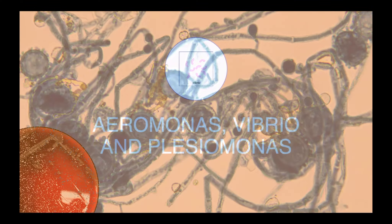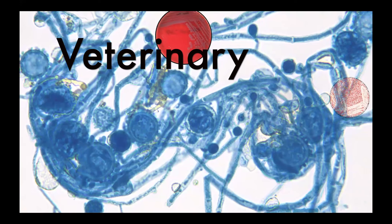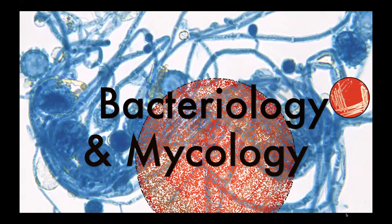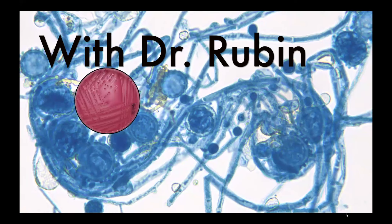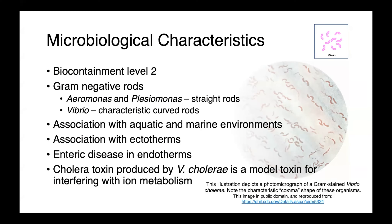In today's lecture, we're going to discuss three genera of bacteria which are primarily found in water: Aeromonas, Plesiomonas, and Vibrio. These bacteria cause some really important diseases in fish and other aquatic species, as well as potentially some zoonotic infections in people. Organisms within all three genera are considered biocontainment level 2, and they're all gram-negative rods. Aeromonas and Plesiomonas are straight gram-negative rods, while Vibrio have a characteristic curved or comma-like morphology, like you can see in this illustration here.